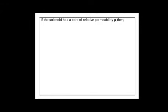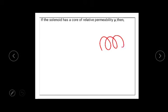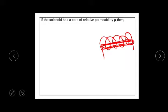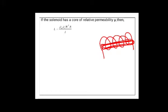If the solenoid has a core of relative permeability μᵣ — meaning if we insert an iron core into the solenoid — then the expression becomes L = μ₀μᵣN²A/l. You have to include that relative permeability. You can expect such questions for one mark.